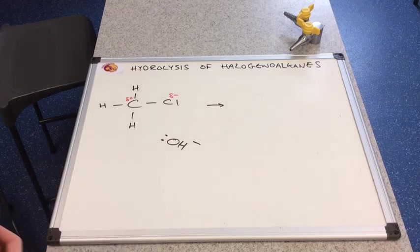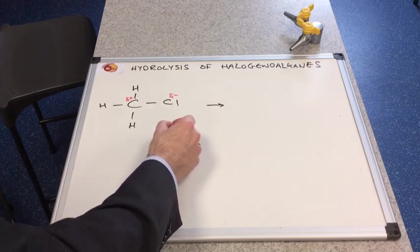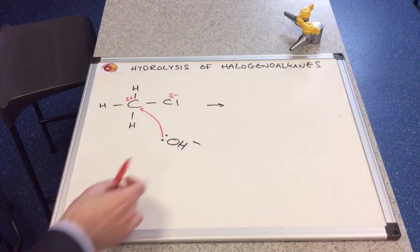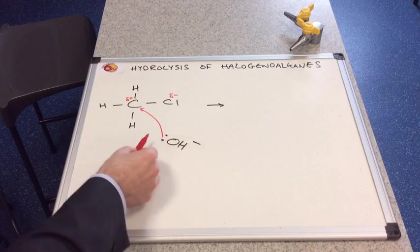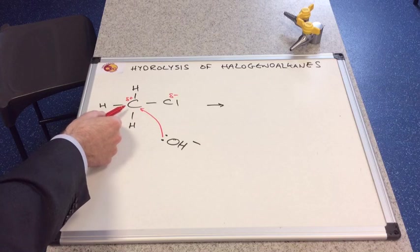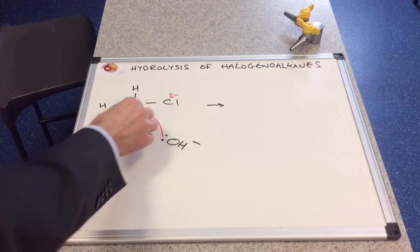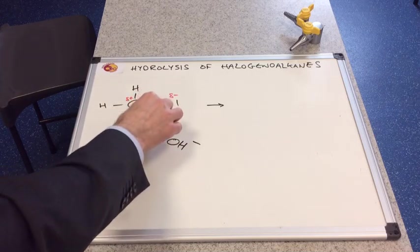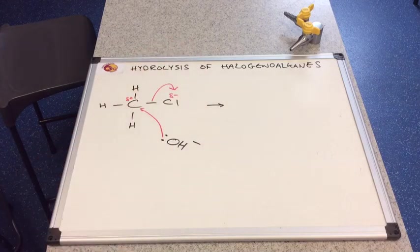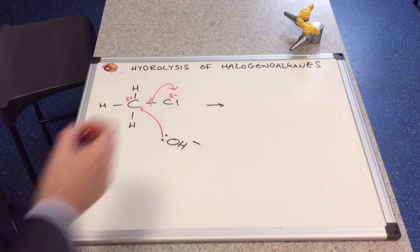These are obviously negative because they represent a pair of electrons, and so you can see that there will be a movement of a pair of electrons from the hydroxide ion to this slightly positive electron-deficient carbon atom. And because this pair of electrons is now a lot closer to the pair in the bond, they will be repelled completely onto that chlorine, and effectively it will break this bond.